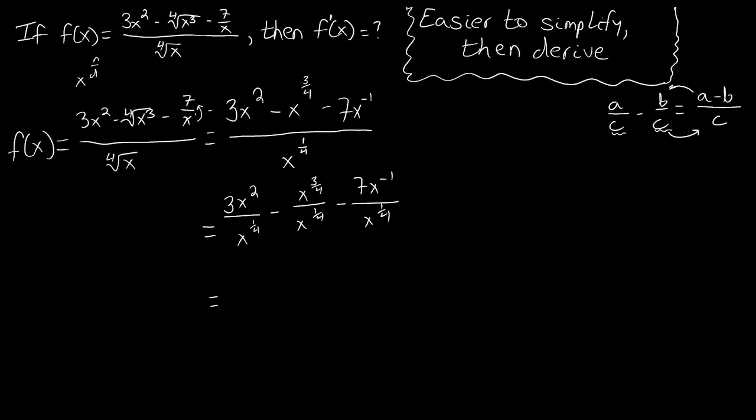Now, when we have the same base divided by the same base like this, what can we do to their exponents? We can subtract them. And in this case, we do the numerator power minus the denominator power.